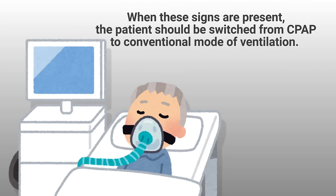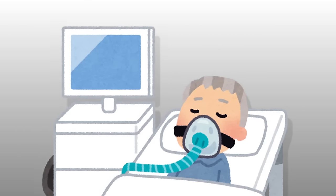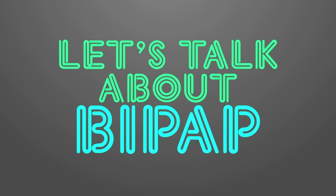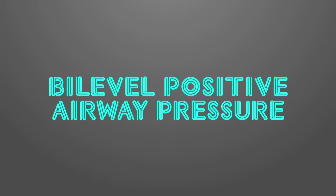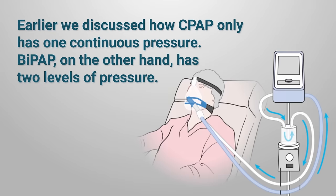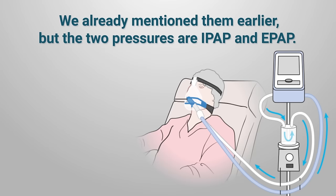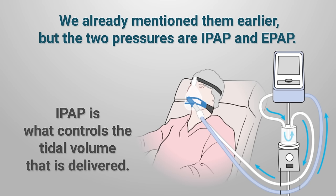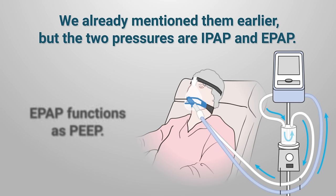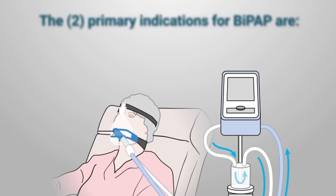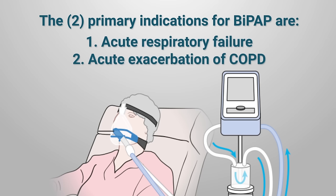When these signs of fatigue are present, the patient should be switched from CPAP to a conventional mode of ventilation. Now let's talk about BiPAP, which stands for bi-level positive airway pressure. While CPAP has only one continuous pressure, BiPAP has two levels of pressure — hence the name bi-level. The two pressures are IPAP and EPAP: IPAP controls the tidal volume delivered, and EPAP functions as PEEP.